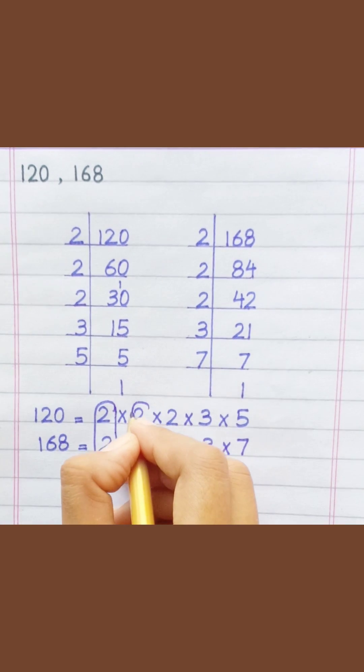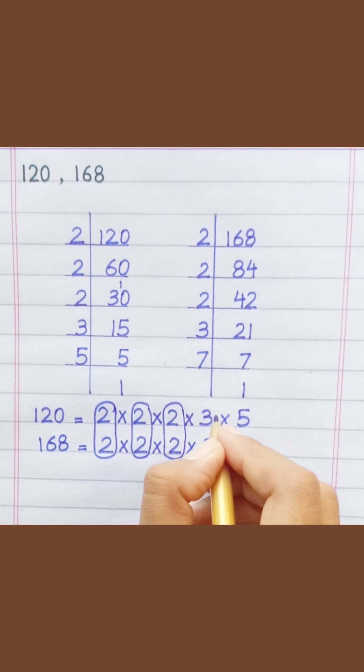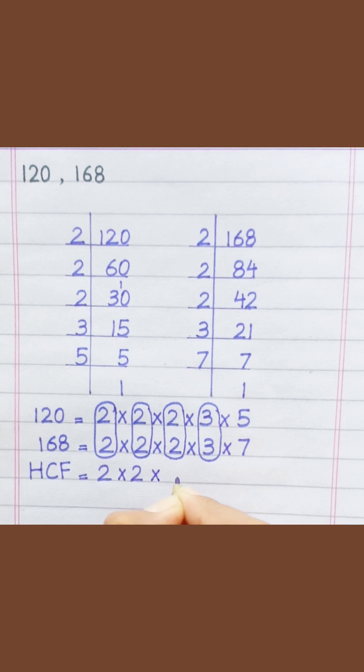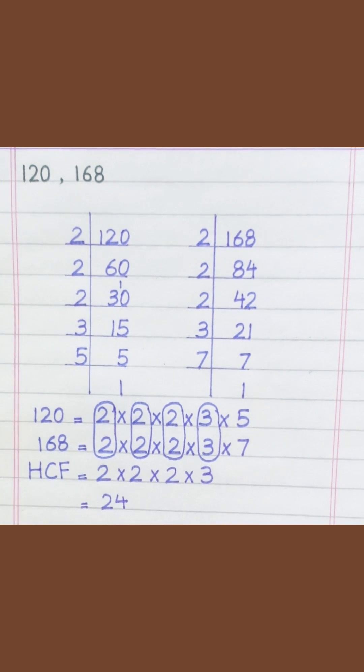Loop the common prime factors among both. HCF equal two multiply two multiply three equal twenty-four.